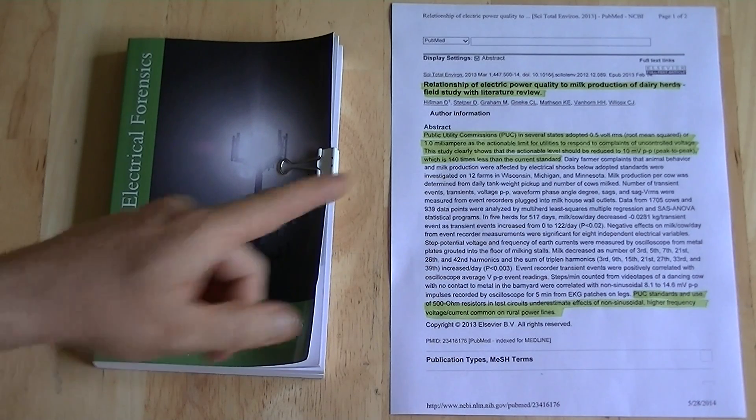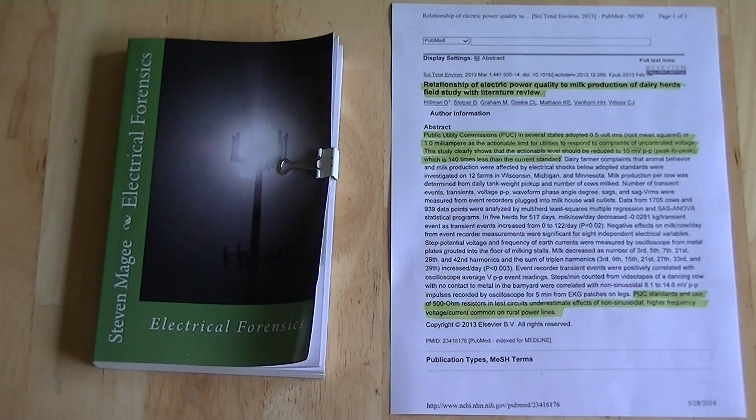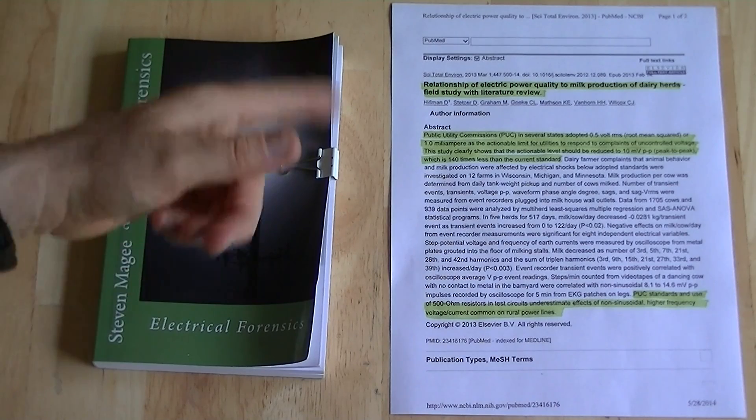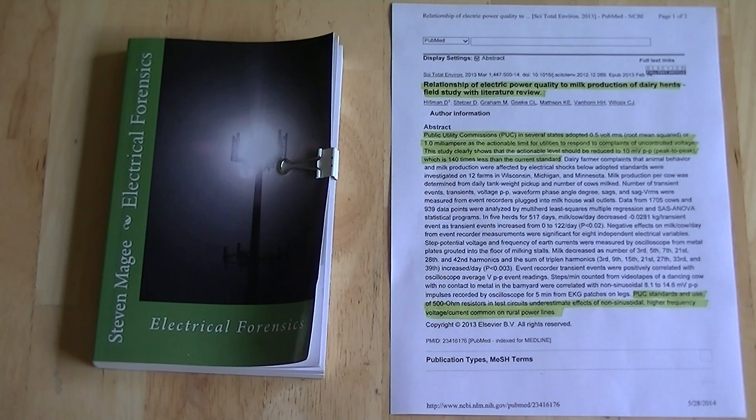We're going to talk about this article. It's available on my website and you can download this particular page and read it. It's called Relationship of Electric Power Quality to Milk Production of Dairy Herds, Field Study with Literature Review.